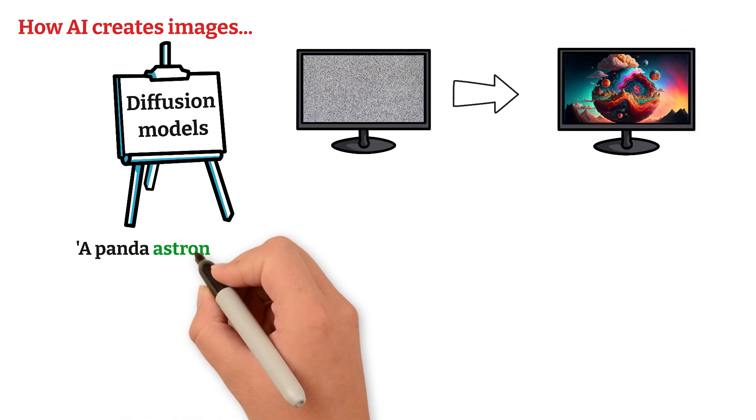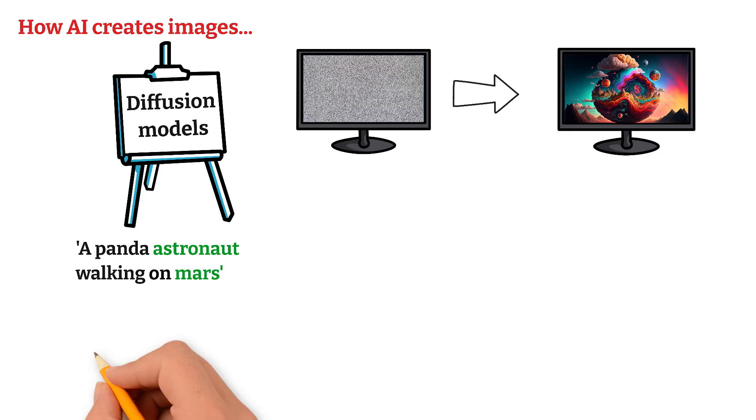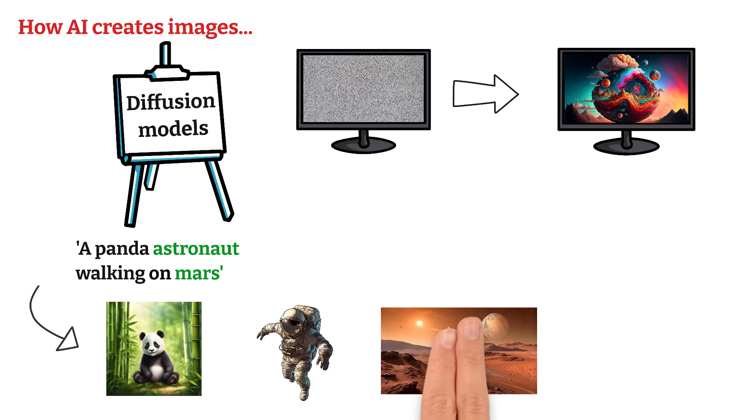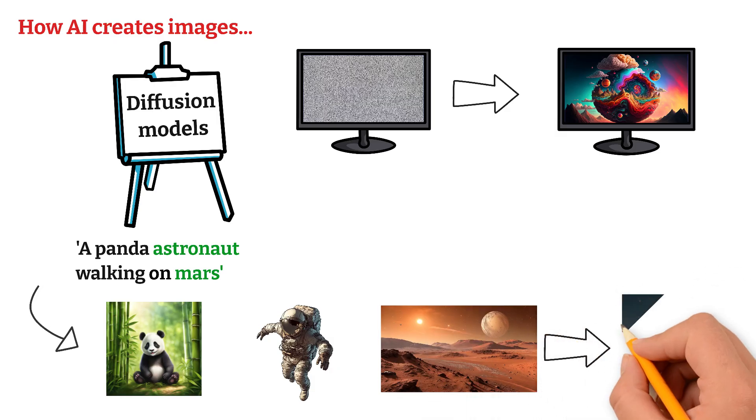So if you type, a panda astronaut walking on Mars, the AI slowly transforms that noise into a panda, a spacesuit, and a Martian landscape, all based on what it has learned from real images during training.